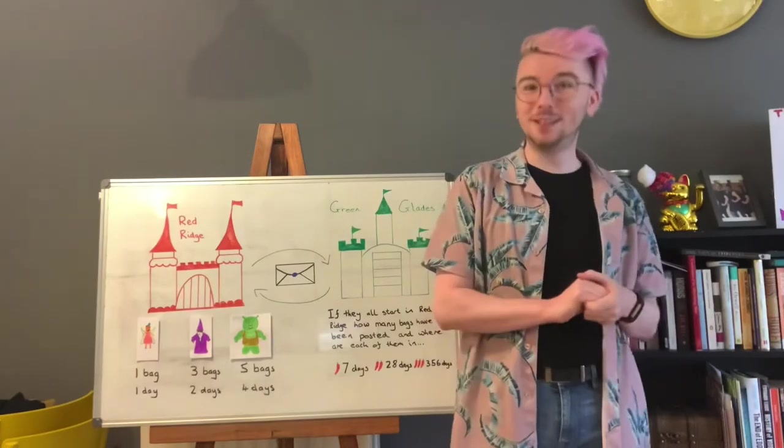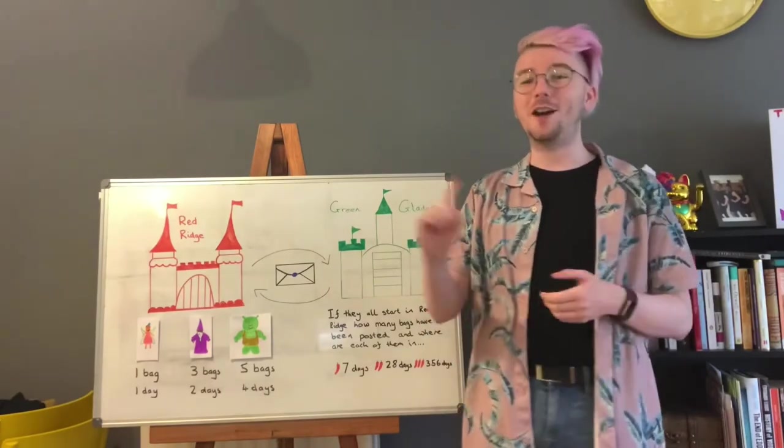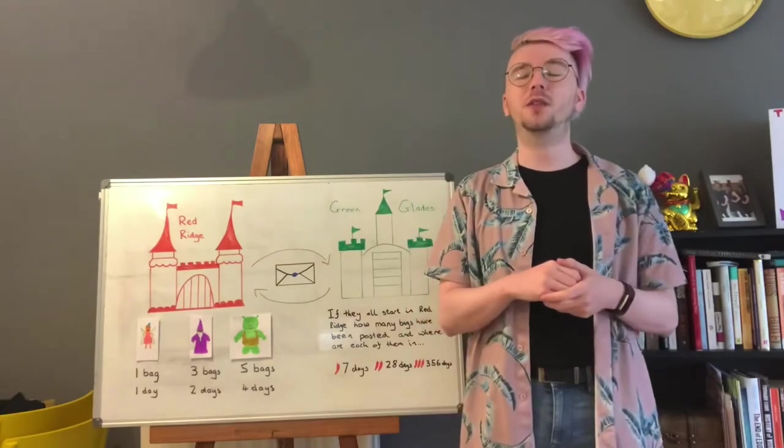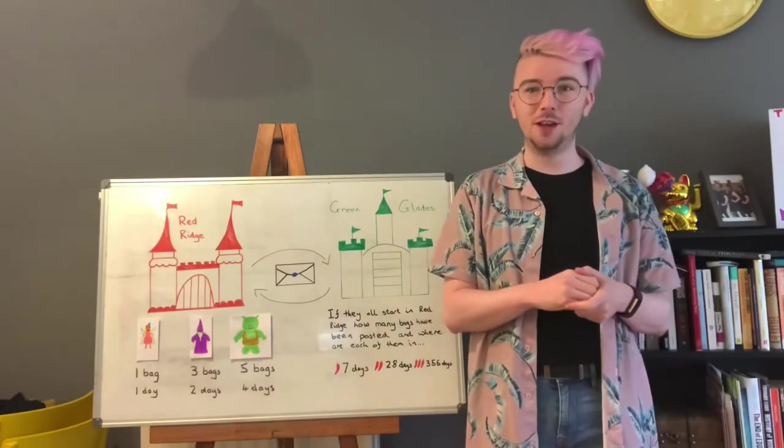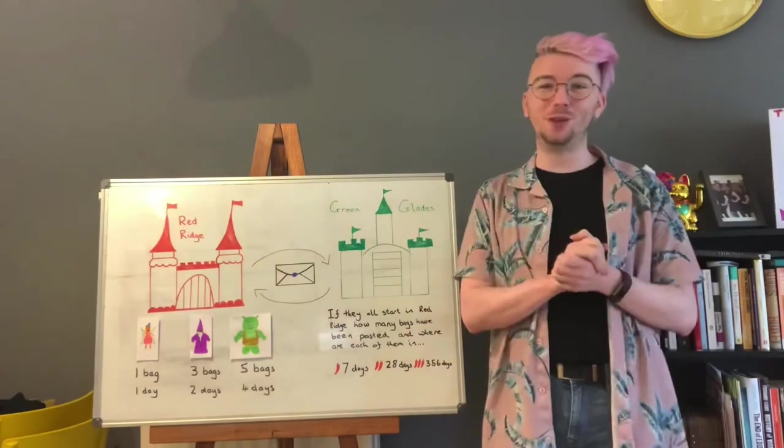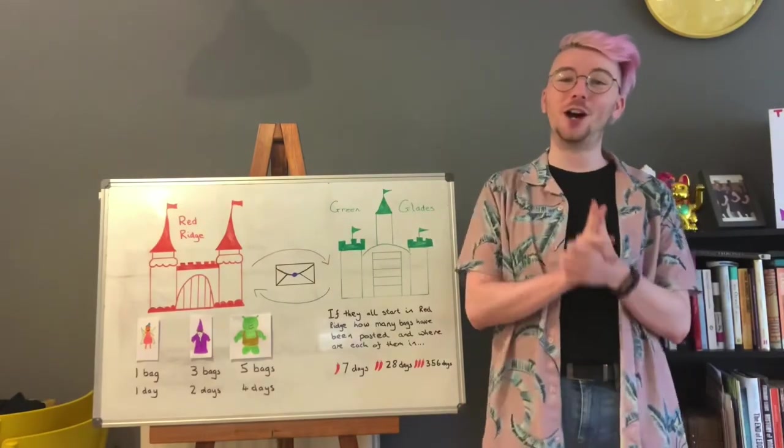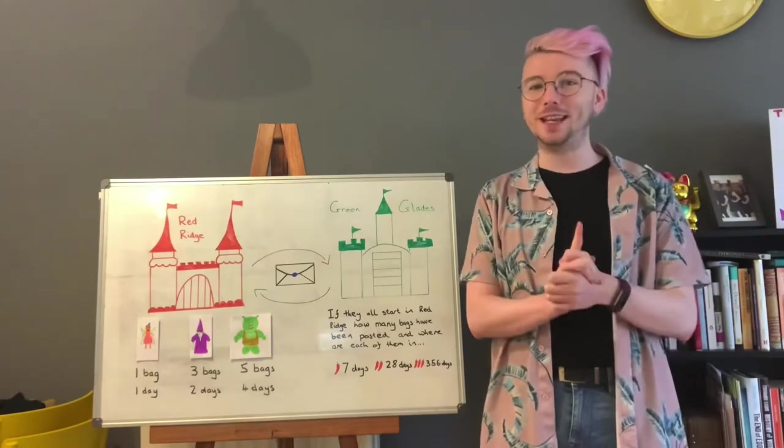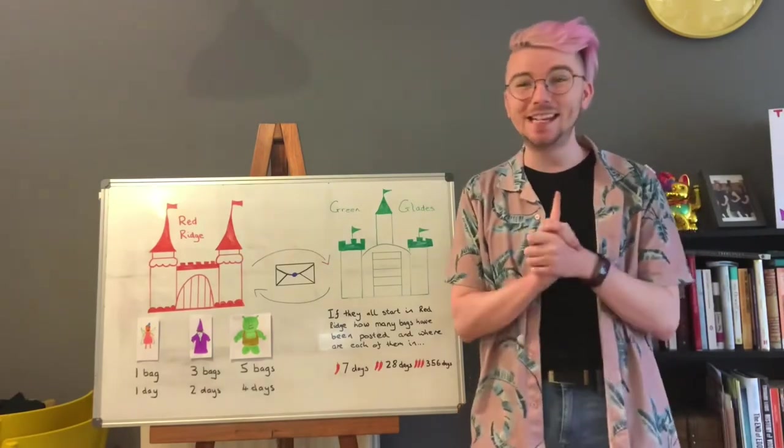Using that knowledge, we know that our fairy must be in Redridge because they travelled 356 times. Our wizard is also in Redridge because they travelled 178 times and our ogre must be in Greenglades because they travelled 89 times.